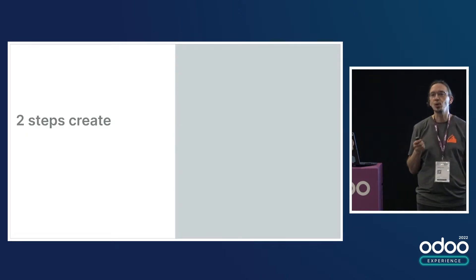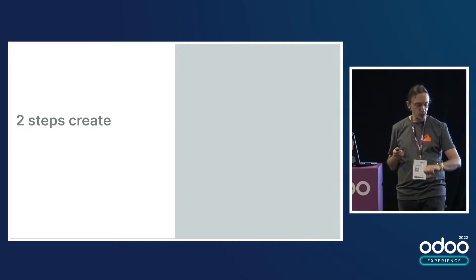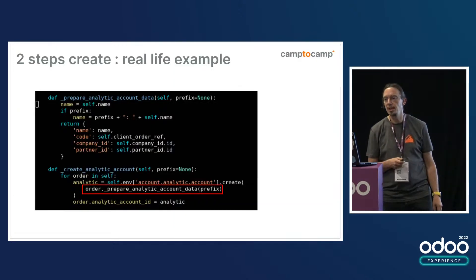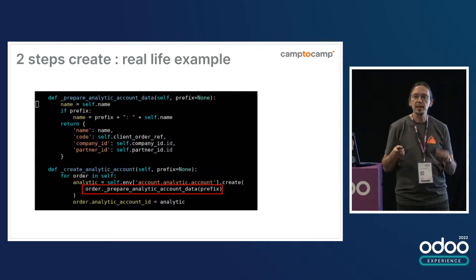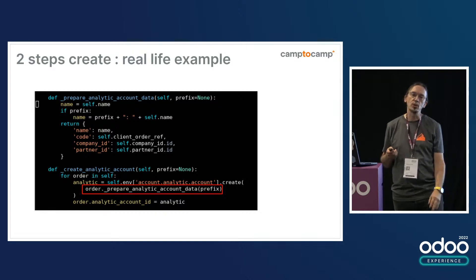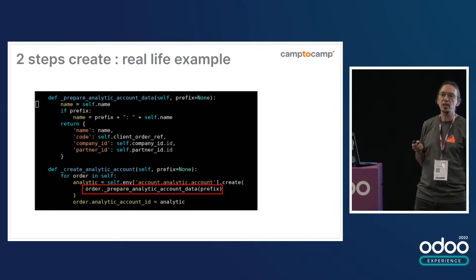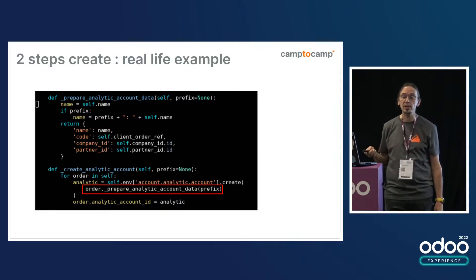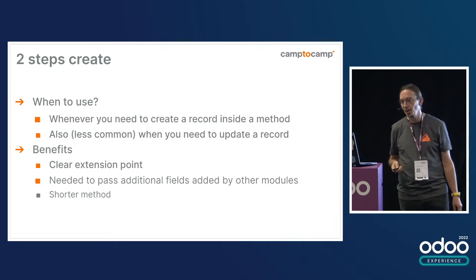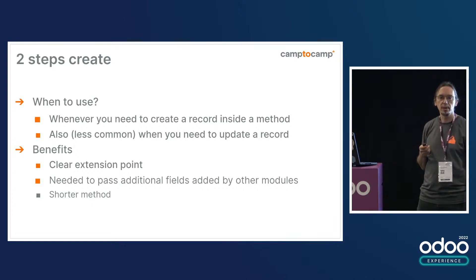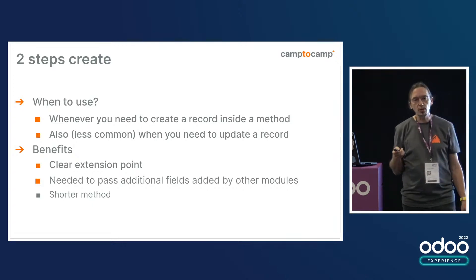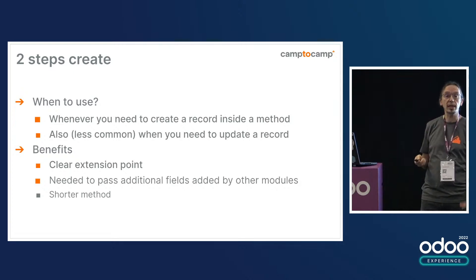The first pattern you want to use is the two-step create. Two-step create is extracting a method that generates the dictionary of values that you pass to create in a separate method. Each time you pass a hard-coded dictionary to the create method, God kills a kitten — don't do that. Extract that in a separate method. When to use it? Always. You can also use that when you need to update a method. This way you will have one clear extension point in your code, giving people an opportunity to pass values for required fields that they are adding in their modules. And you'll get a shorter method.